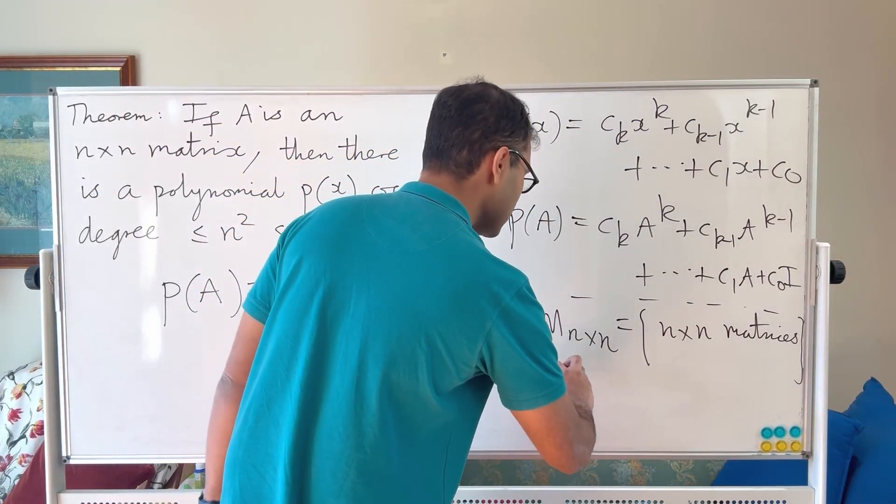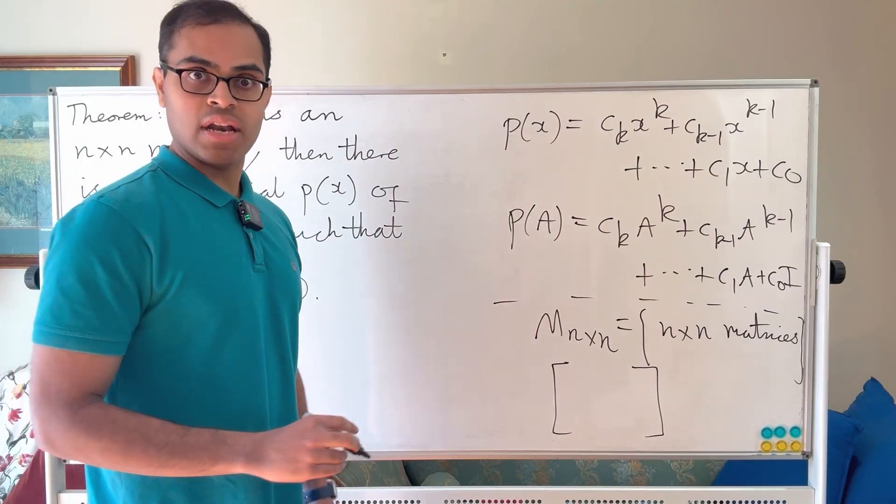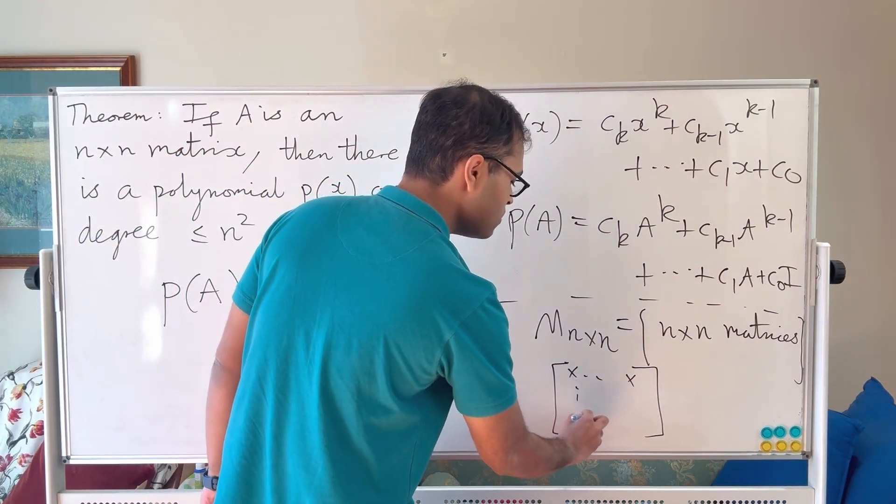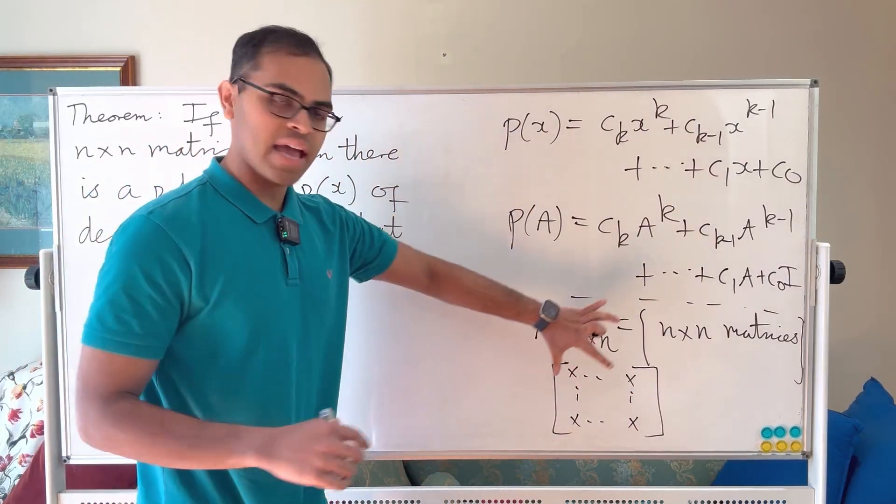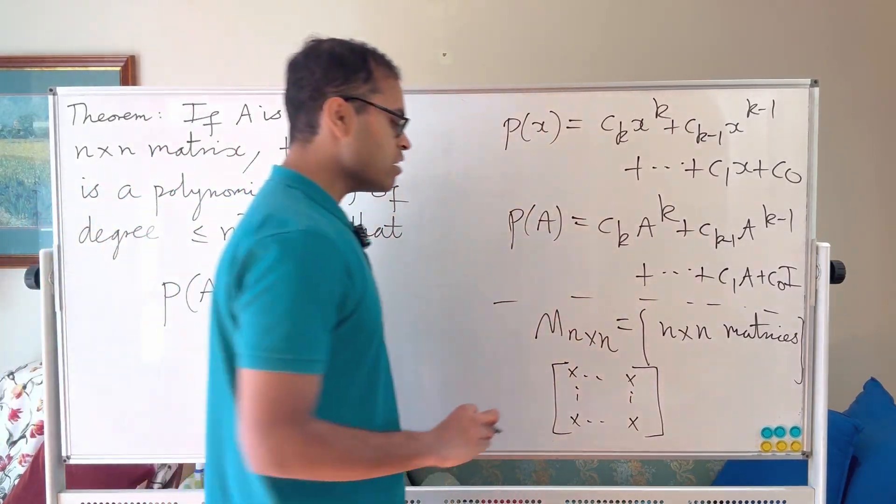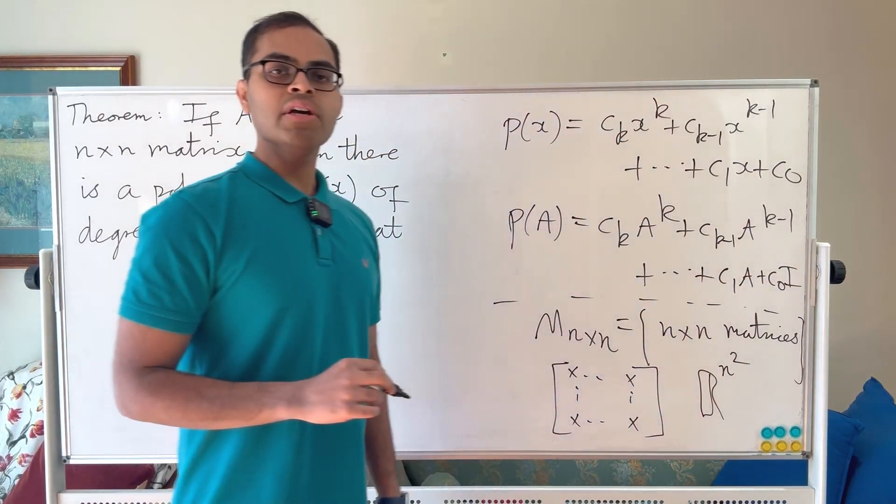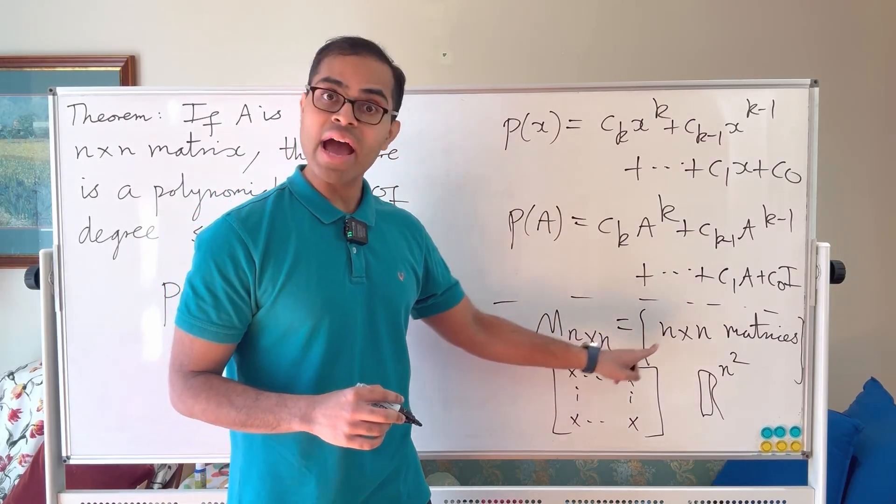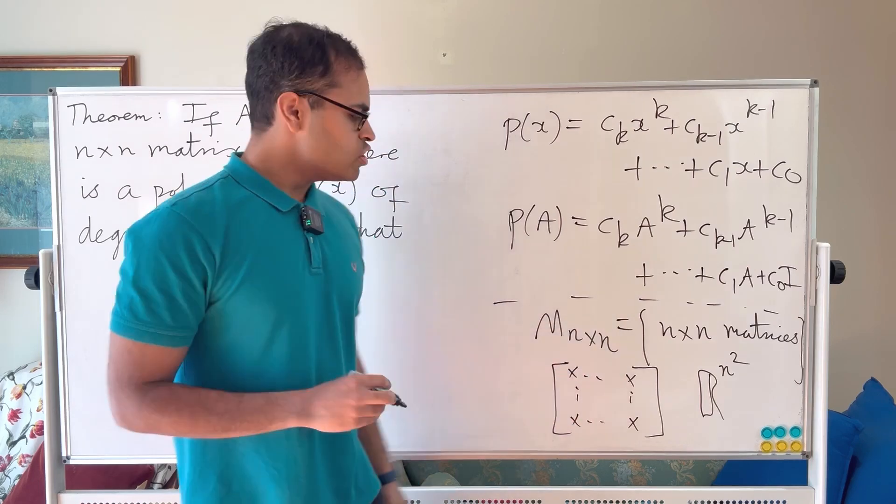And the point here is that if you think about what an n by n matrix is, it has n squared coordinates. There are n squared possible entries of the matrix. And if you like, if we're thinking about them as real numbers, you can think of them as just being n squared dimensional Euclidean space. How do you add the matrices? You add them coordinate-wise, just like vectors. And you scale them coordinate-wise.